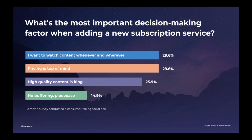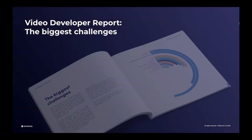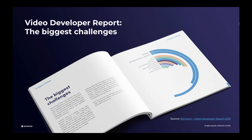The main point is that when we look at the viewer requirements and expectations for how they're going to choose a subscription streaming service, quality of content is on that list, but it is not number one. The two things tied for first place are: 'I want to watch the content whenever and wherever,' and pricing. This illustrates that content is not the only mechanism used in the decision-making process for viewers. Every year the Bitmoving team does a developer survey. Cathy, can you tell us a little bit more about what this is?